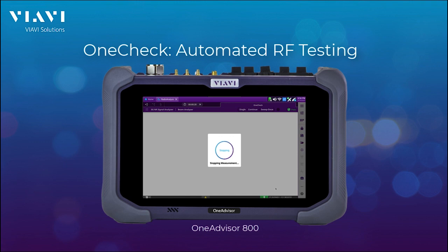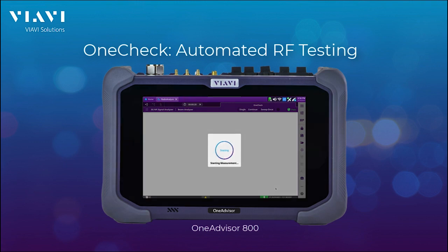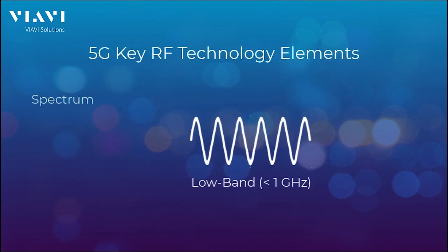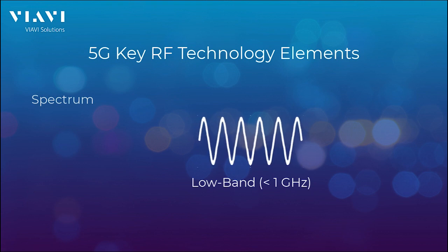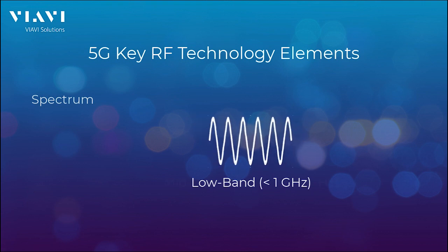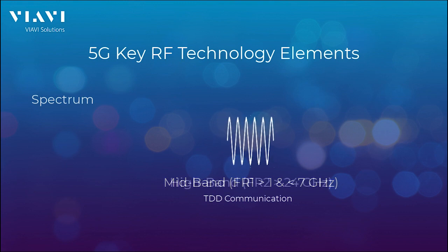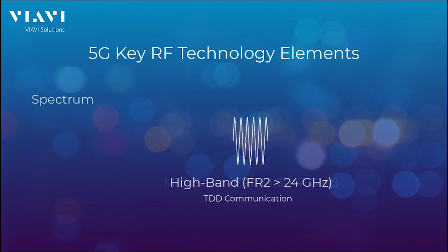Let's take a quick look at the 5G key technology elements. Starting with the spectrum: low band below 1 GHz, mid band between 1 and 7 GHz where anything above 3 GHz is based on TDD, or time division duplex, and high band above 24 GHz.